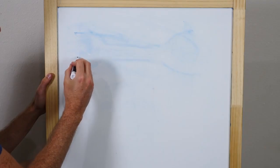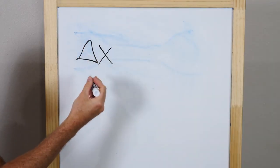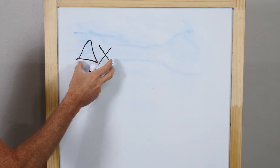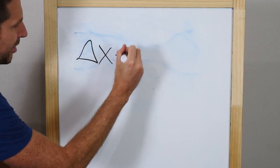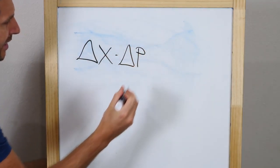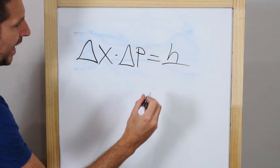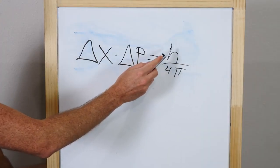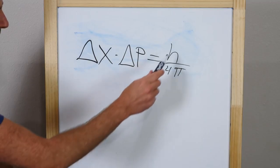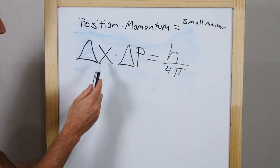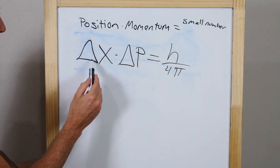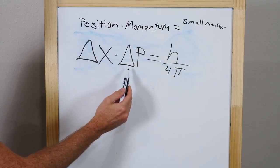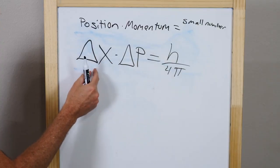The uncertainty principle equation looks like this. So I'm gonna put a delta x. So that just means your variability in position times your variability in momentum equals h over four pi. Now this h is just a small constant called Planck's constant. So this is kind of frustrating. It means that we can't absolutely know the position of something and the momentum of something. We can only absolutely know one or the other.